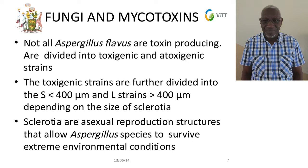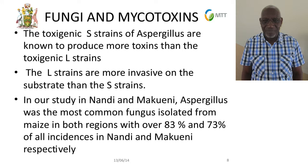Sclerotia are important because they allow the fungi to survive environmental conditions and stay in the soil for a long time. The S strains of Aspergillus are known to produce more toxin than the L strains. However, L strains can produce just as much toxin if conditions are favorable, so their toxigenicity should still be taken very seriously. The S strains are also more invasive, meaning if both are present in a matrix, they can move fast and produce more toxins.